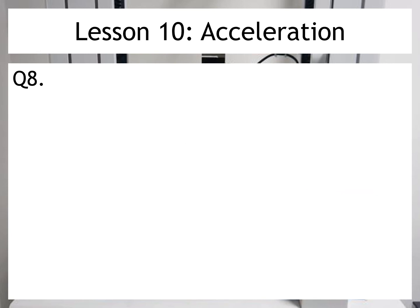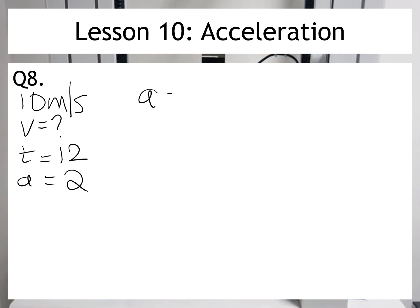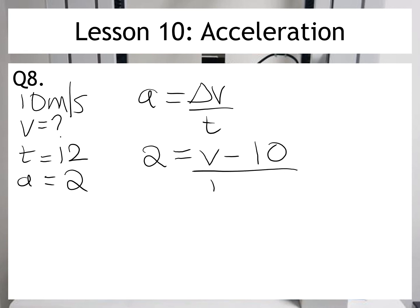For question 8, I know that my object starts at 10 metres per second, and I'm trying to find the final velocity — I don't know that. I'm told that it takes 12 seconds to travel and that the acceleration is equal to 2. Once again, I'm going to go back to the equation: a equals change in velocity divided by time t. And then I put the numbers in. So acceleration is 2, the change in velocity is v minus 10, and then I'm dividing by the time, which we're given as 12.